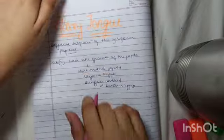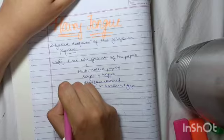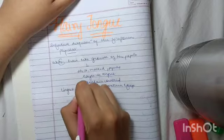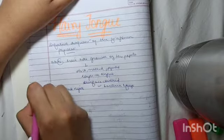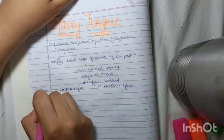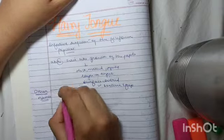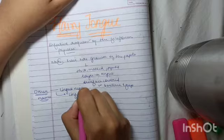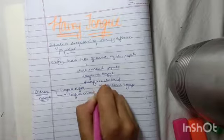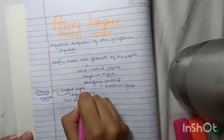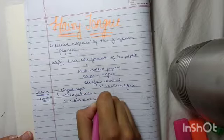Coming on to the other names. It is also called as lingua nigra, or lingua villosa. It is also called as black hairy tongue.